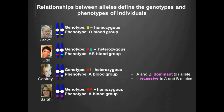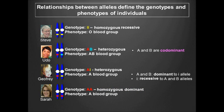Homozygous individuals like myself with two copies of a recessive allele are said to be homozygous recessive. Likewise, homozygous individuals like Sarah with two copies of a dominant allele are homozygous dominant. An important point to note is that dominance and recessiveness are not intrinsic properties of alleles. Rather, whether an allele behaves as dominant or recessive depends on the allele it is paired with. For example, the A and B alleles are each dominant when paired with the i allele, but when paired with each other they are said to be codominant. We will explore this type of allele relationship in a later video.